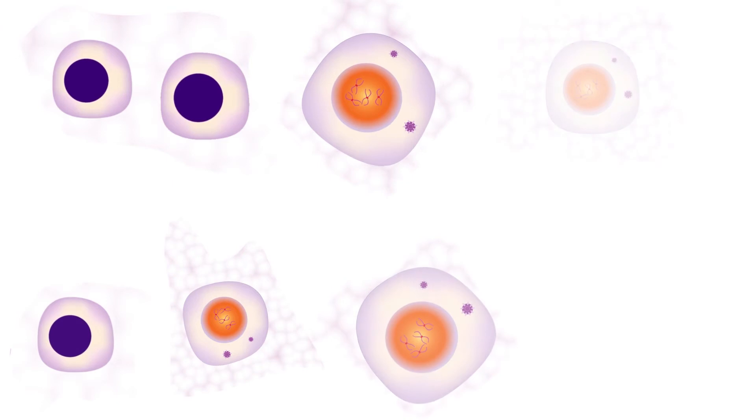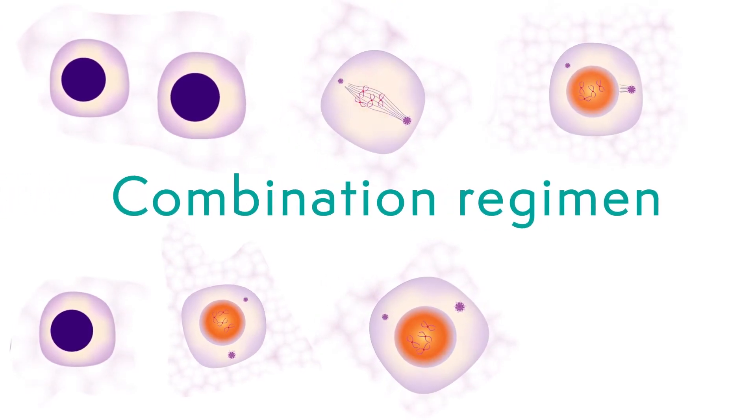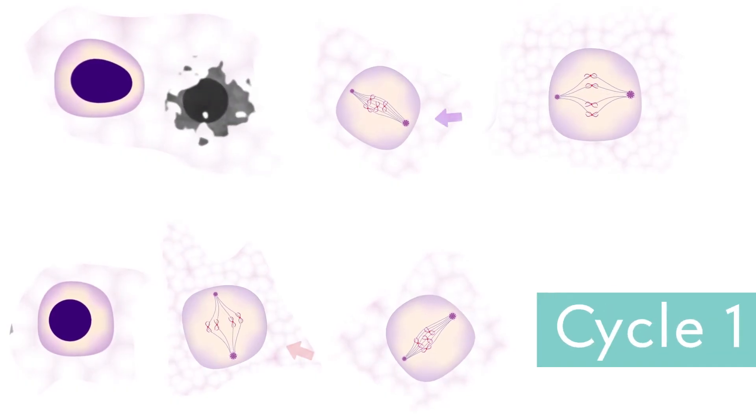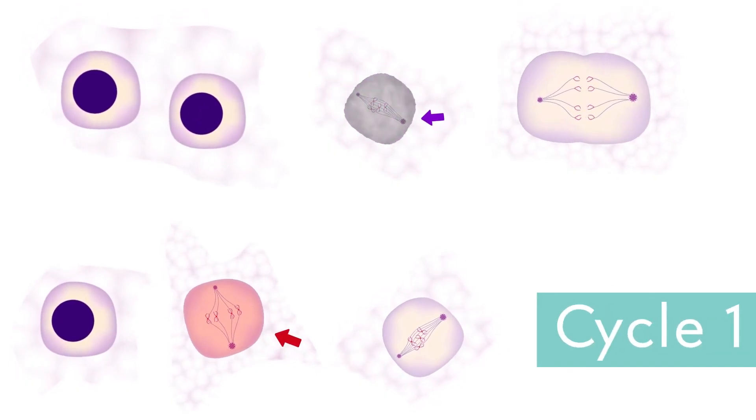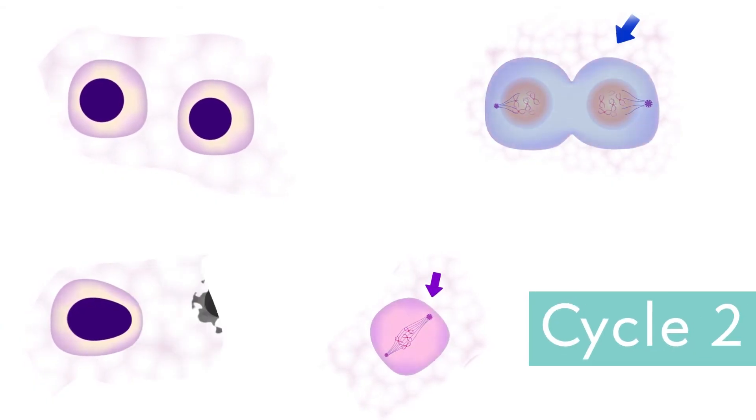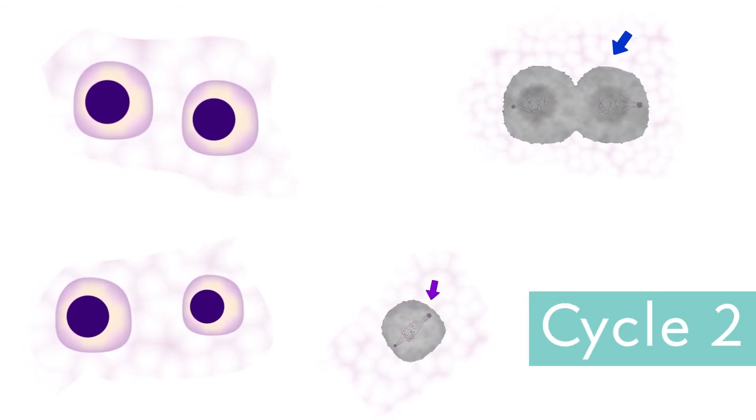Even when several chemotherapy drugs are used together in a combination regimen, some of the cancerous cells will not be killed. This may be because they were not dividing or were not in the right phase of their cell cycle at the time of the treatment. This is why chemotherapy is repeated in cycles.